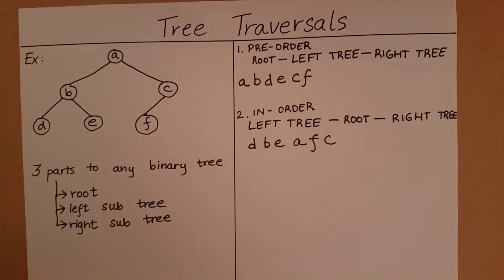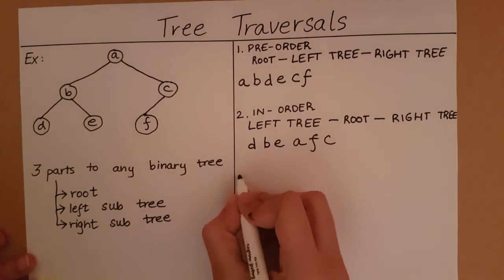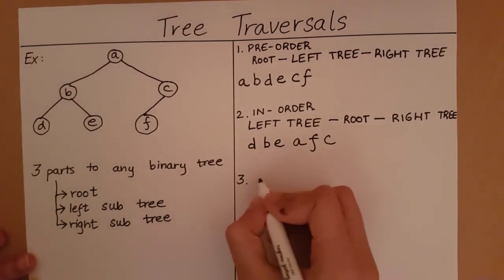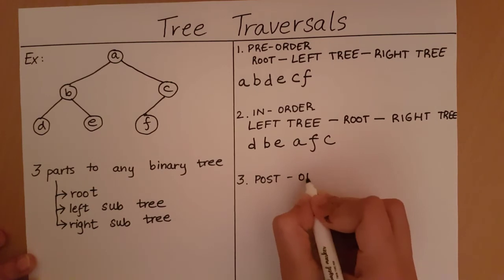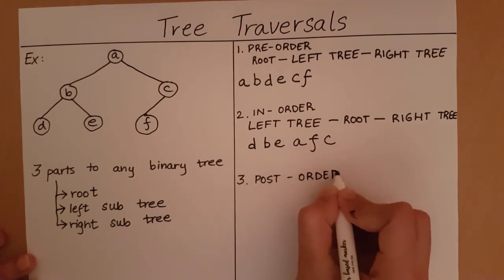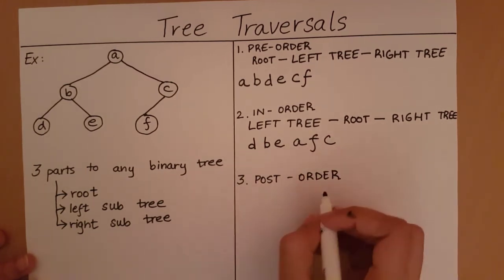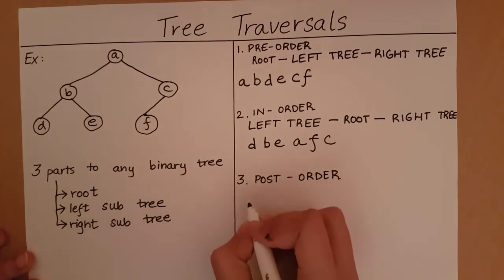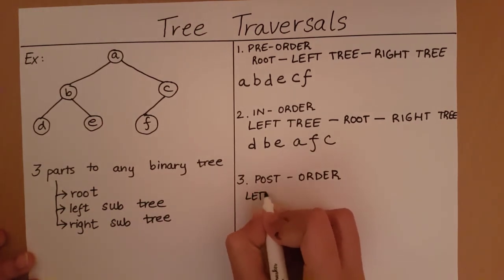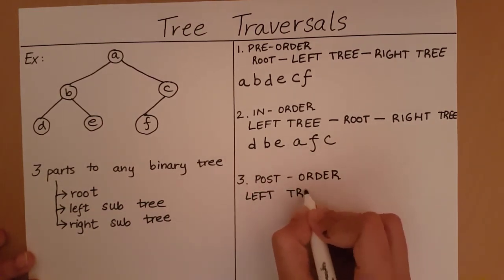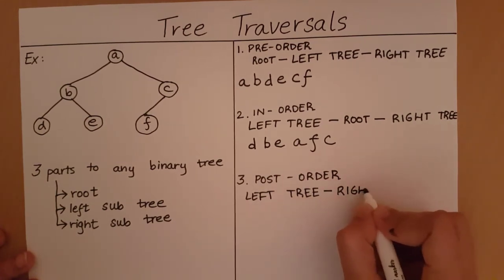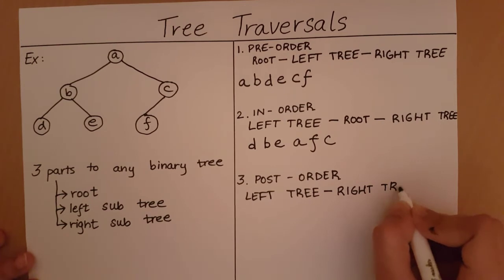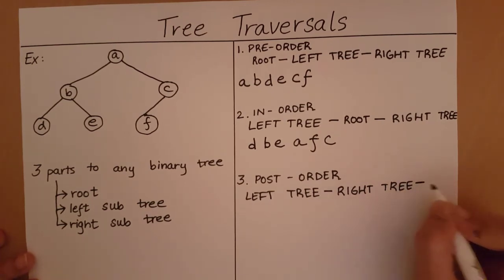This is how we are going to perform inorder traversal. Let's look at the third method, which is going to be postorder. In this order, we are going to first look at the left subtree, then traverse the right subtree, and only then give the root.